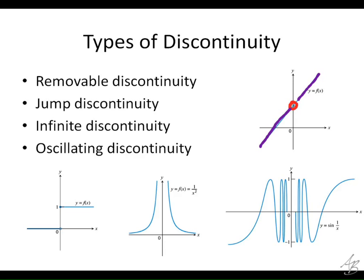It's removable because we can redefine this function so that it's exactly the same function, except it also includes this point, and it would be continuous then. If we just fill that hole, then it's continuous.